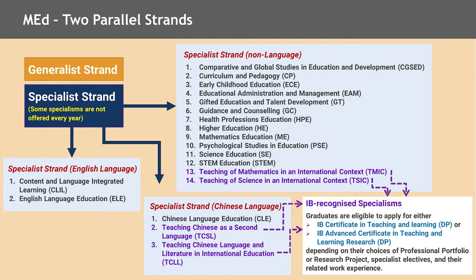Otherwise, if you work in the field of education already or have a clear idea about what you want to learn, we have several programs divided into specialist strands — non-language related and language related. Those that are language related include English language related and Chinese language related. I call your attention particularly to the specialist strand on Chinese language, which includes IB recognized specialisms — at least two out of three offered by the faculty.